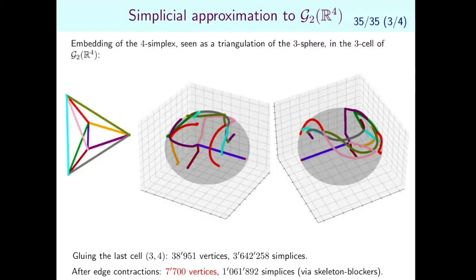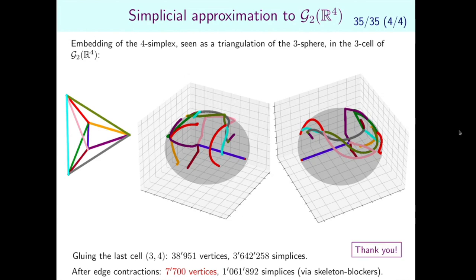On the last slide: when gluing the last cell, we find a simplicial approximation from the 3-sphere to the existing 3-skeleton. Embedding this triangulation of the 3-sphere into the skeleton produces a striking visual. Thank you very much.